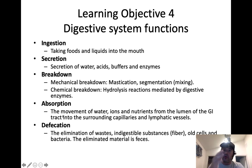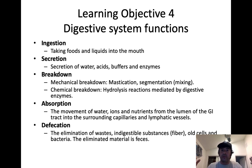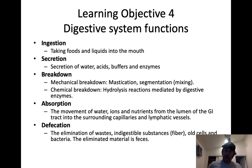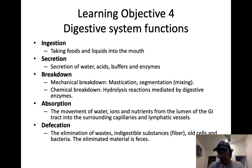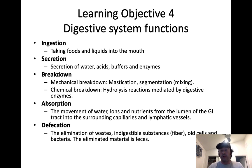Absorption is when we move material from the lumen of the GI tract — that internal tube — into the bloodstream or into the lymphatic system. Water-soluble substances get absorbed directly into the blood, and that blood is drained from the GI tract via the superior mesenteric vein, inferior mesenteric vein, and splenic vein — all feeding into the hepatic portal vein. All that nutrient-rich blood first goes to the liver. That's what hepatic portal circulation is. The liver filters and processes that blood before it enters systemic circulation. Fats, on the other hand, are absorbed across the lining of the intestinal tract into the lymphatic system.